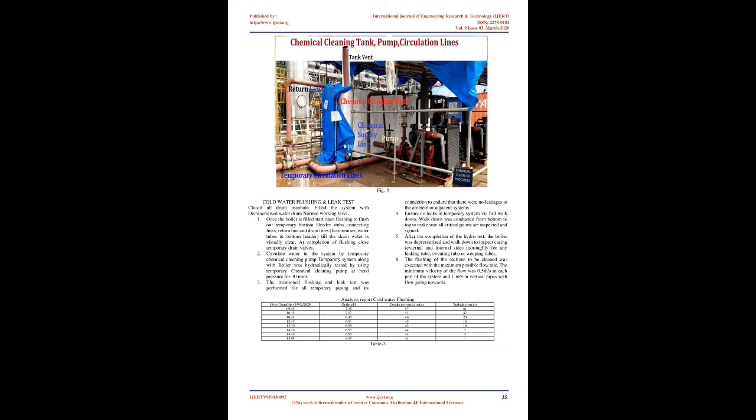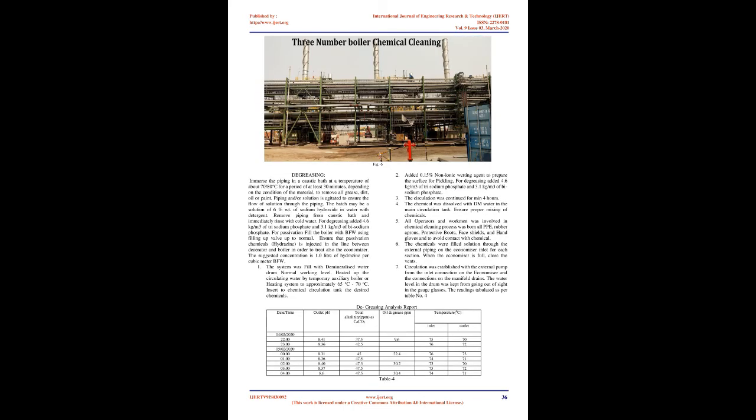Sequence of operation: The cleaning of piping was carried out in the following sequence in a single fill method: 1. Cold water flushing with potable water to remove dirt, dust, loose rust, and foreign matter. 2. Degreasing with non-ionic wetting agent. 3. Circulating with ammoniated inhibited citric acid. 4. Circulating with sodium nitrite (NaNO2). 5. Drain. 6. Rinse with ammoniated water. 7. Drying and inspection.